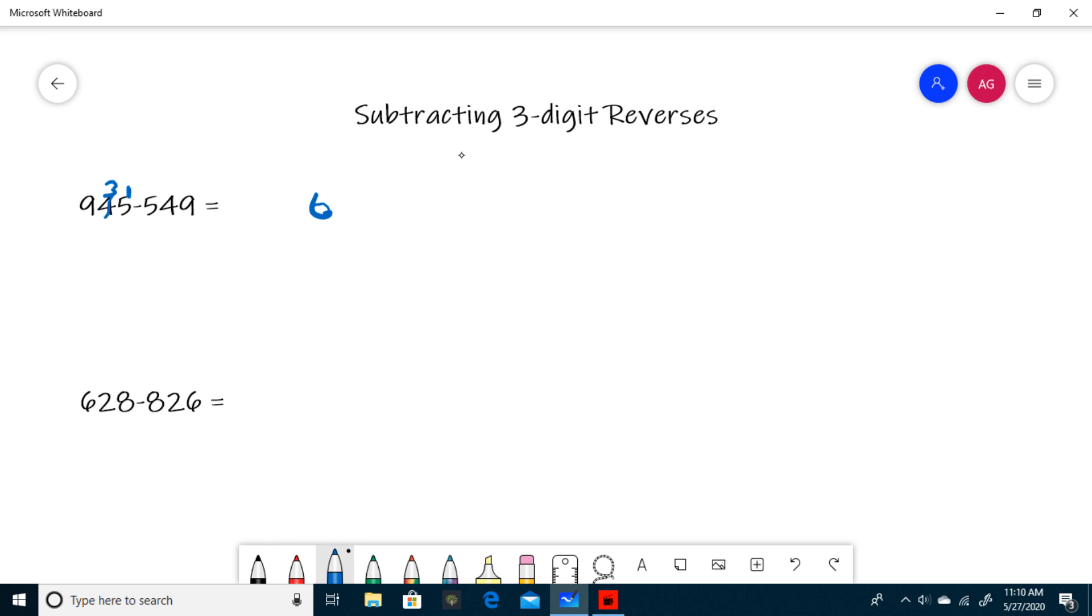When you subtract 3-digit reverses, the middle digit, or the tens, is always going to be a 9, and the way you find the hundreds digit is by doing 9 minus our ones digit, or 6. So that's 3, so our hundreds digit is 3. So 945 minus 549 equals 396.